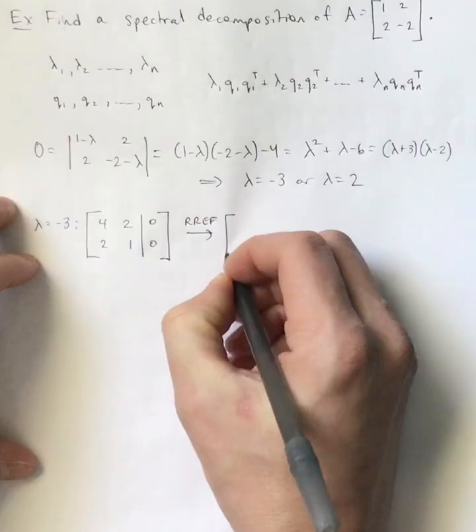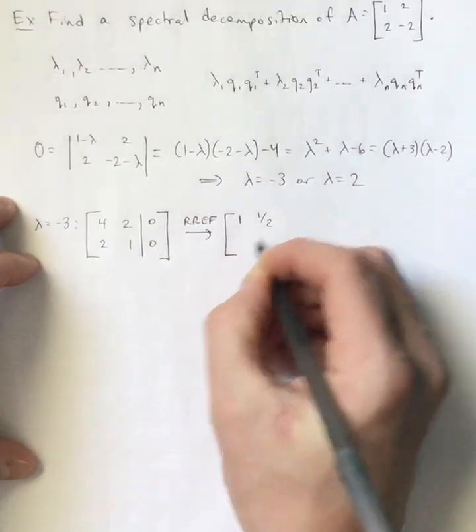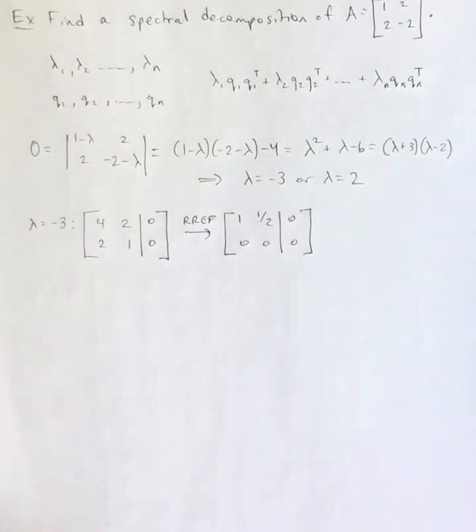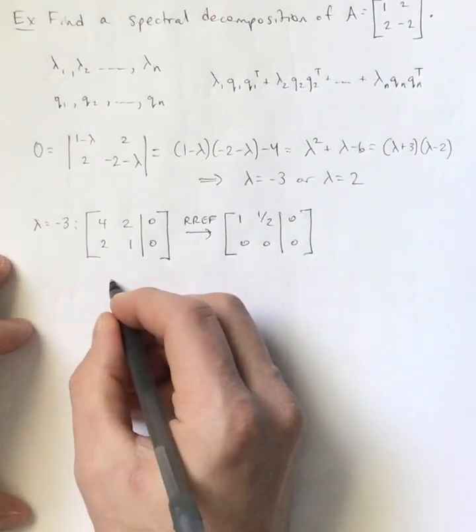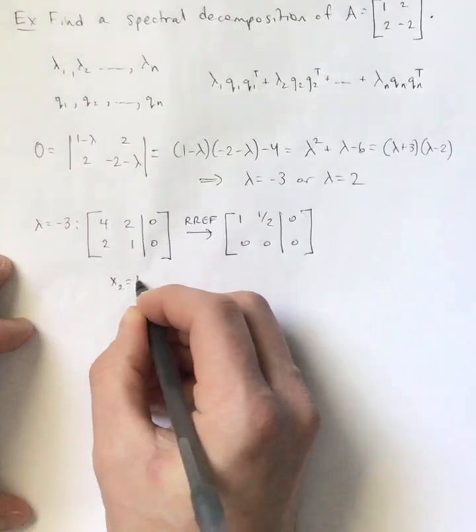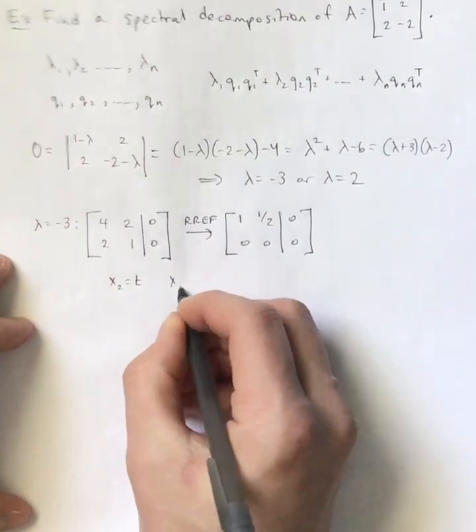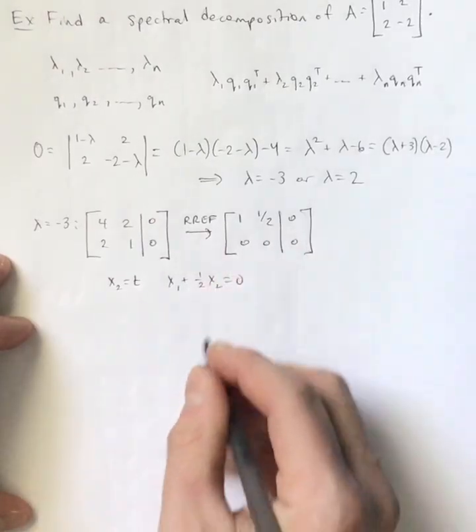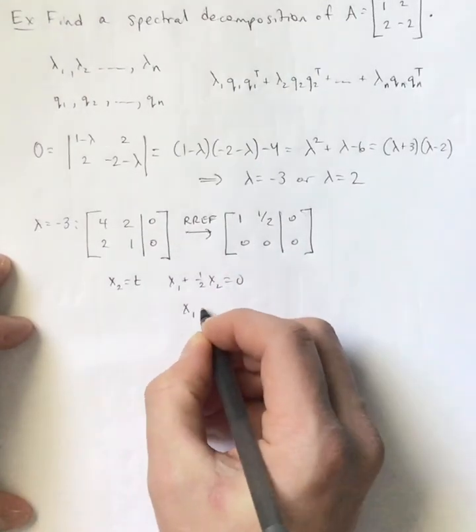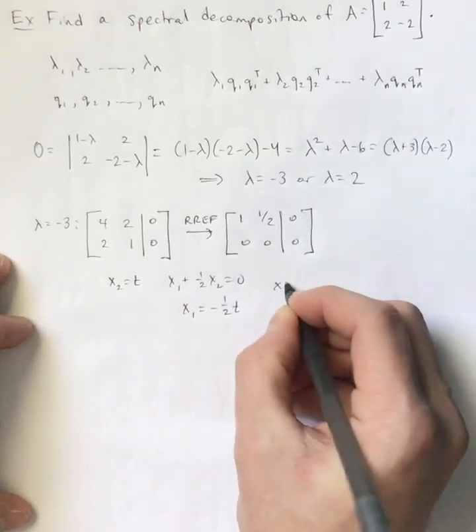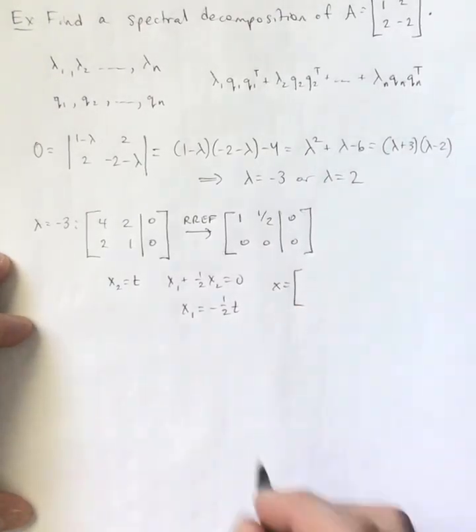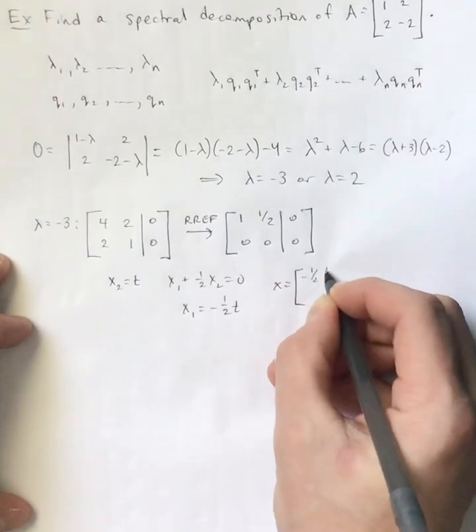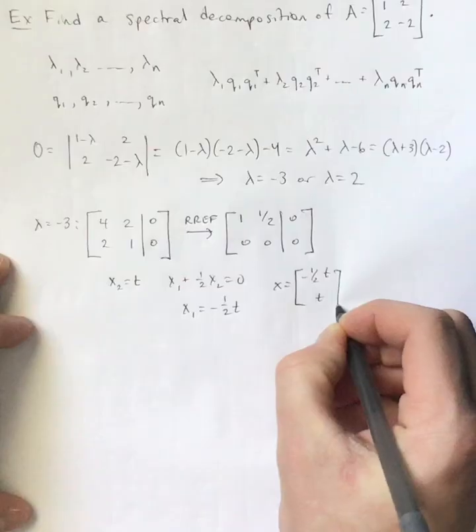And in fact, we could just make this one zero out and we could multiply the top row by one-fourth. That way we'll get a leading one right there. So this is going to be the RREF for this matrix. Now, X2 is our free variable. And X1 plus half of X2 is zero. That's that top row. And of course, that means X1 would be negative one-half T.